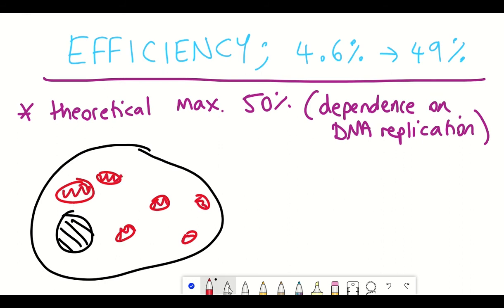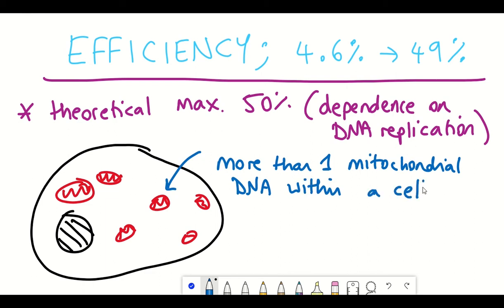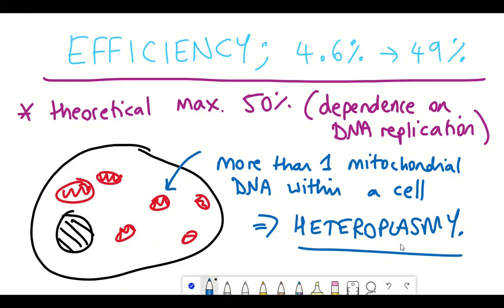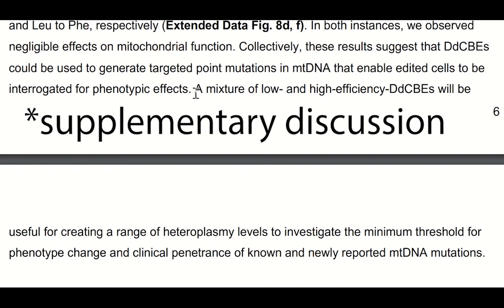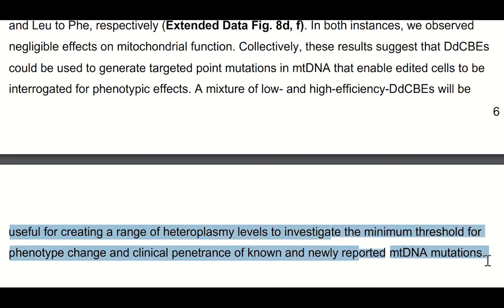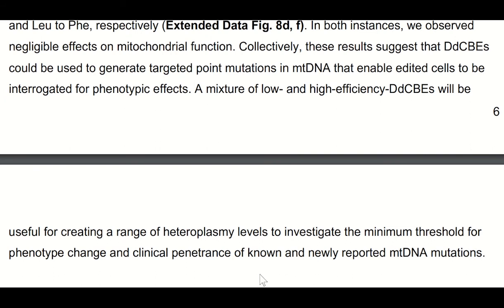But actually having a variety of different editing efficiencies could actually also be a very useful thing regarding this tool. And that's because unlike the fact that we have just our one nucleus containing nuclear DNA, there's lots of different mitochondria within a cell. And so there's more than one copy of mitochondrial DNA. And interestingly, a lot of these diseases in mitochondrial DNA that I've spoken about can have different phenotypes depending on what percentage of the mitochondria contained that same mutation. And so this is given a cool name, heteroplasmy. So to quote from this News & Views article about this paper, a mixture of low and high efficiency DddA cytosine base editors will be useful for creating a range of heteroplasmy levels to investigate the minimum threshold for phenotype change and clinical penetrance of mitochondrial DNA mutations.